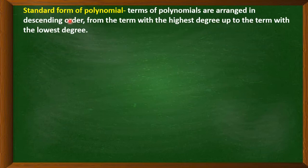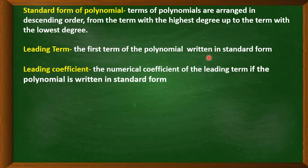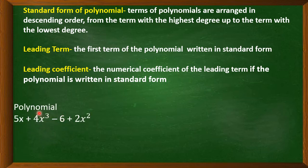Next, the standard form of a polynomial. When can we say a polynomial is already in standard form? Remember, the terms of a polynomial are arranged in descending order from the term with the highest degree down to the term with the lowest degree. The leading term is the first term of the polynomial written in standard form. The leading coefficient is the numerical coefficient of the leading term.